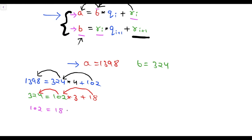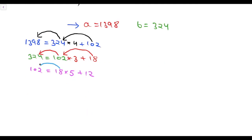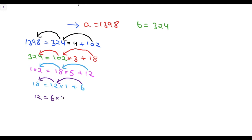The new a is 18 and the new b is 12. Now 18 can be written as 1 times 12 plus 6. Then 12 can be written as 2 times 6 plus 0, and now we will stop here because our remainder has become 0. This means 6 is our GCD of a and b.